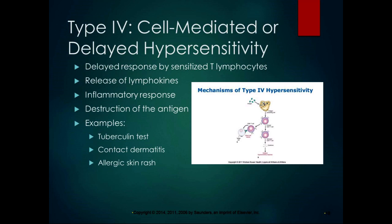Type 4 is cell-mediated or delayed hypersensitivity — this is the one that comes into play in organ rejection. It's a delayed response by sensitized T lymphocytes which release lymphokines, causing an inflammatory response. Lymphokines are another form of chemical mediator. It destroys the antigen via the inflammatory response, so if the antigen is the foreign tissue from the transplanted organ, it wants to destroy that. Other examples besides tissue rejection are the tuberculin test, contact dermatitis, and allergic skin rash — those are all type 4 cell-mediated delayed hypersensitivity.